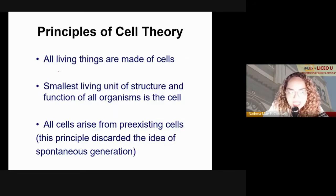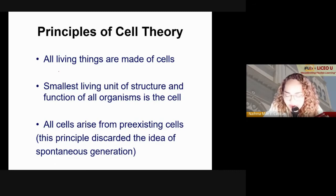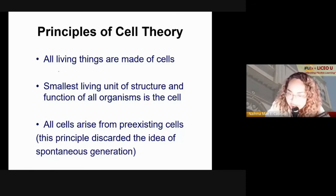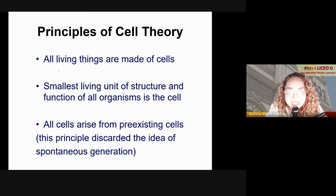All of these findings are collectively the principles of cell theory. The first principle is that all living things are made of cells. The second is that the cell is the smallest living unit of structure and function of all living organisms. And third, all cells arise from pre-existing cells — just like you and me, who come from both our mother and our father through the combination of their sex cells.